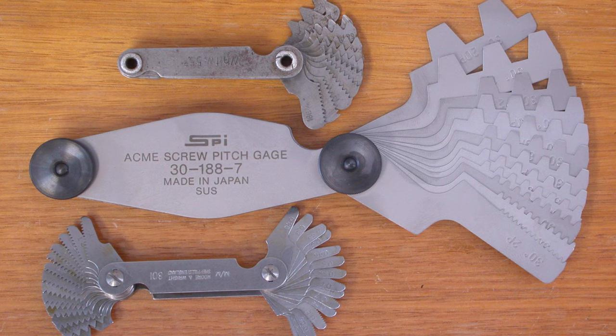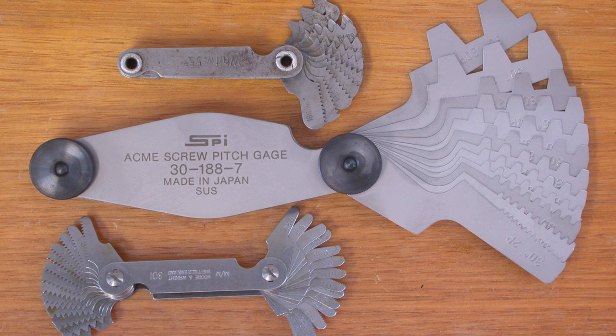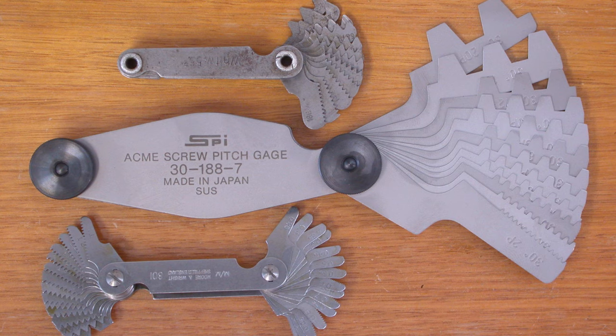If you're intending to cut threads on the lathe using the lead screw, a pitch gauge is really useful because it can help you verify that you have the correct change gears, and it's also very useful for helping you find the pitch of unknown threads.